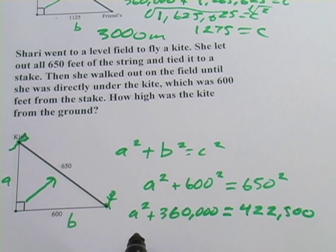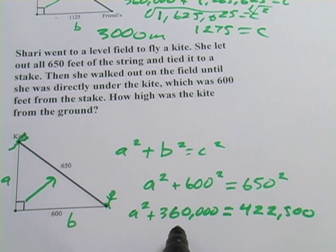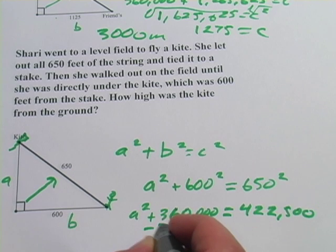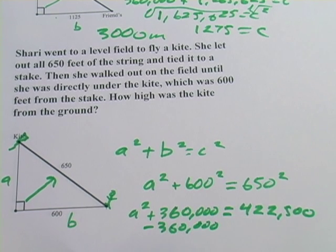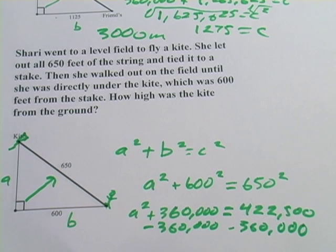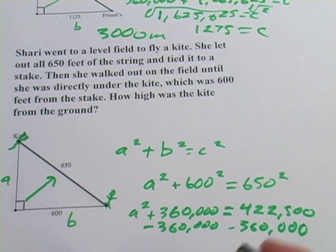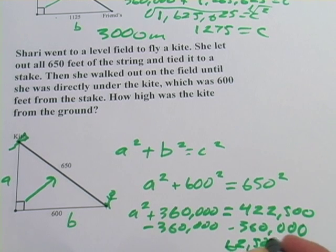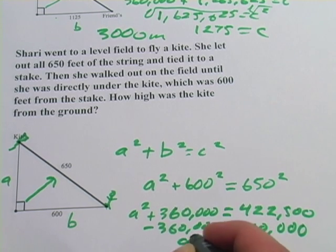Now we're solving for a. The first thing we need to do is get rid of any term that doesn't have the variable in it over on this side. And this 360,000 is what we want to get rid of. So all the numbers are over here, just the variable is over on this side. We've got a positive 360,000, so to get rid of that I'm going to do the opposite. I'm going to subtract 360,000, but the rules of algebra say I have to subtract it from both sides. So 422,500 minus 360,000, and I get 62,500 over here, and a squared is left over here.